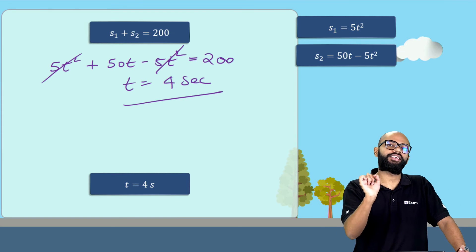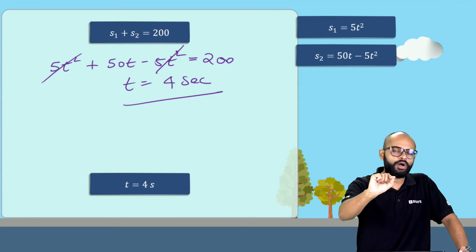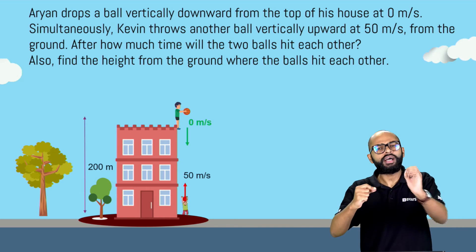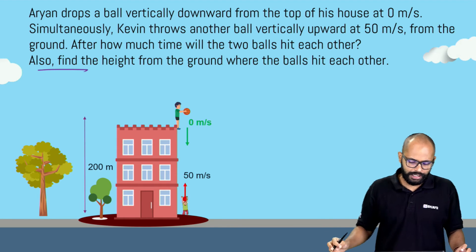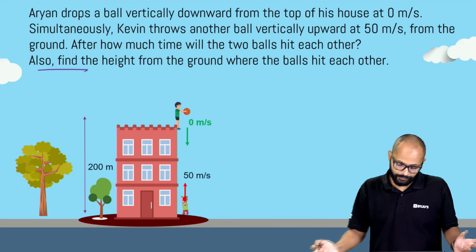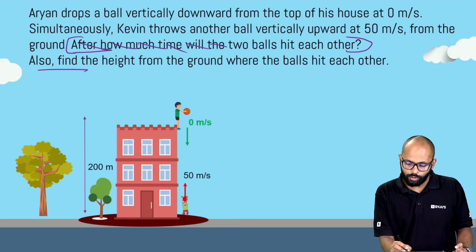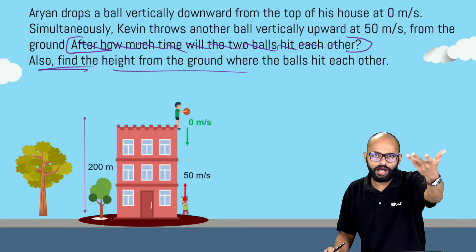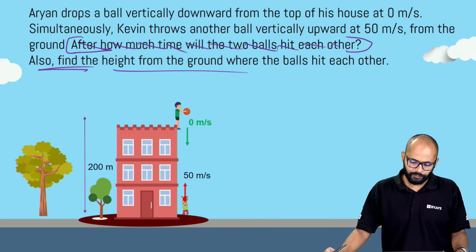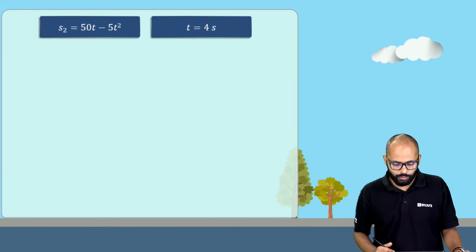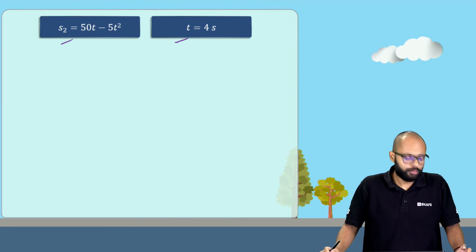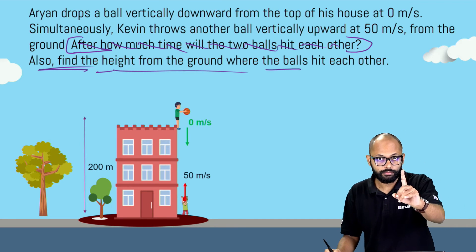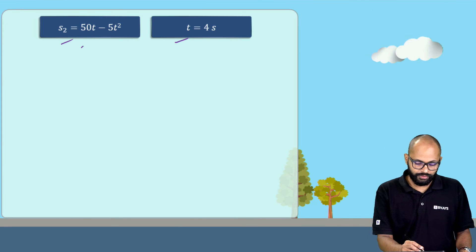This question was not difficult — the only key was understanding that both balls travel for the exact same time. Now I can increase the difficulty: also find the height from the ground where the balls hit each other. I could omit the time part and ask you to find the point at which they meet and how far that point is from Aryan or Kevin. You'd have to find the time anyway.